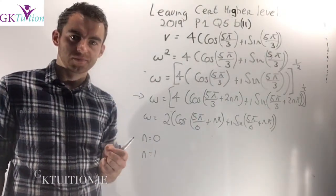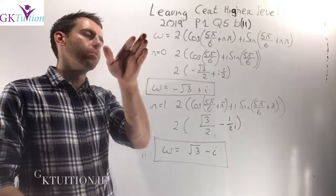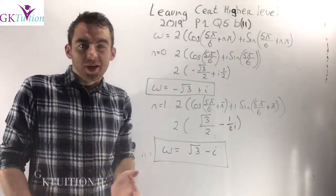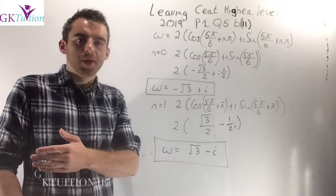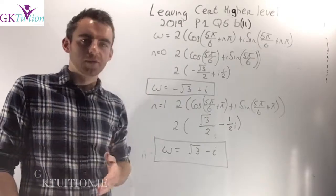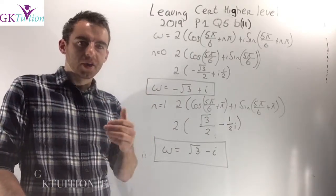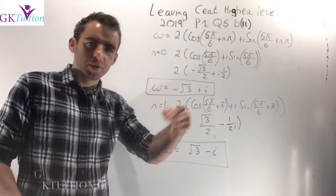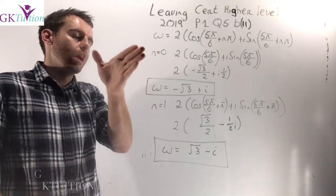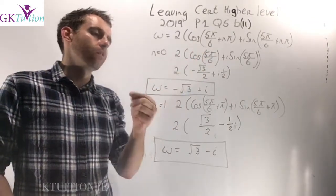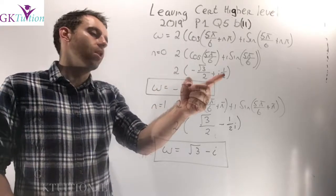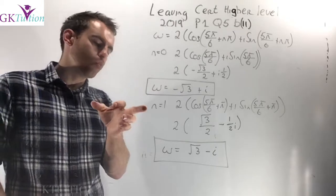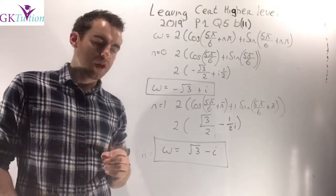Substituting consecutive values of n always yields the two distinct answers — any two consecutive integers work, but n = 0 and n = 1 are simplest. For n = 0, the angle is 5π/6: cos(5π/6) = −√3/2 and sin(5π/6) = ½, giving W = −√3 + i. For n = 1, the angle is 5π/6 + π = 11π/6: W = √3 − i. Those are the two final answers.